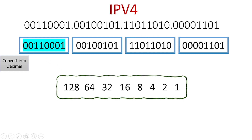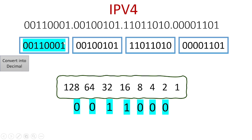Now we have to arrange these digits. First we have 0, then 1 is 8. We have 0. Then the next is 0. Then 1 is 1. Then 32 is 0. When we have 16, the value is 1. Then we have 0. If we have zeroes, we skip those values. If we calculate the 1s, then we write those values. So 1 is 32, 32 plus 16 plus 1 is equal to 49. So we have now converted these 8 digits into decimal format.